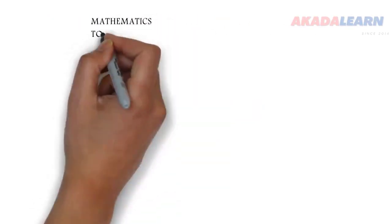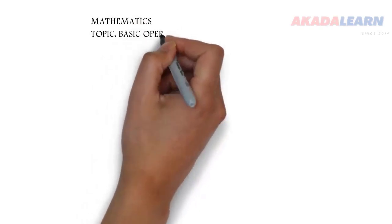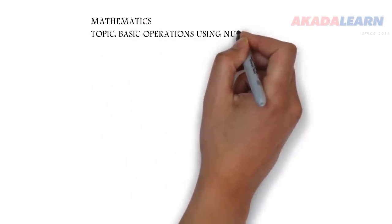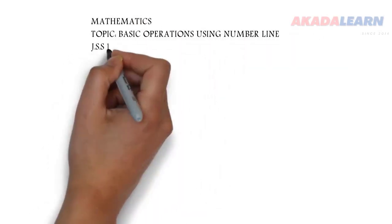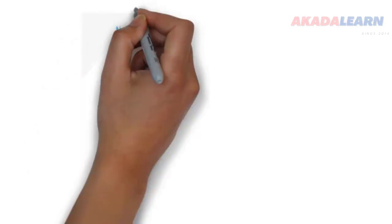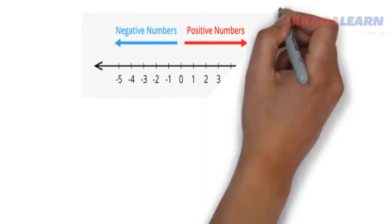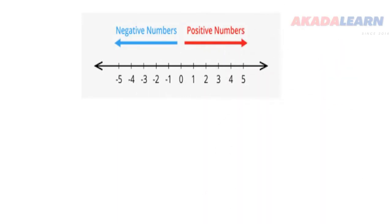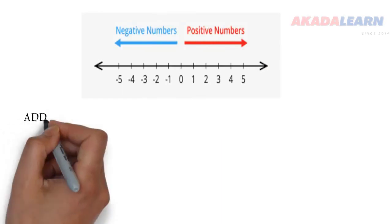Welcome to class. Today we are going to be seeing how to use number line to either add or subtract numbers. So first, let's see our number line. You can see the positive and the negative numbers right there.